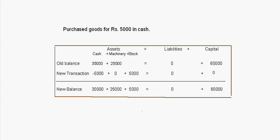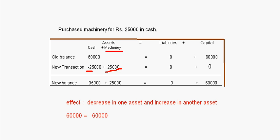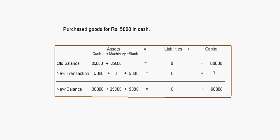The next transaction is: purchase goods for Rs. 5,000 in cash. Goods means stock in accountancy. One more asset comes in — that is the stock — so we now have cash, machinery, and stock. Stock will increase by 5,000 and cash will be deducted by 5,000. Stock comes in and cash goes out. The balance is again 60,000 is equal to 60,000 on both sides, so the transaction is correct.